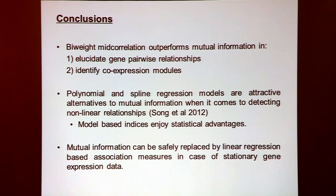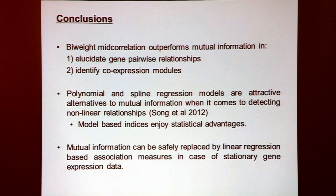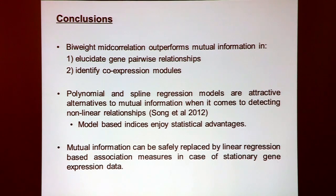In conclusion, bi-weight mid correlation outperforms mutual information for gene pairwise relationships and for identifying co-expression modules. If you need to detect non-linear dependencies, also consider using polynomial and spline regression.